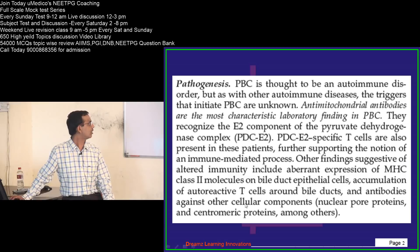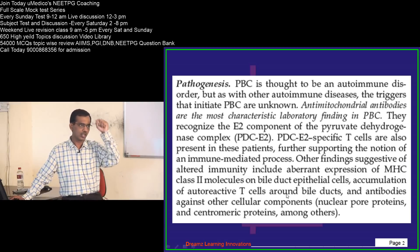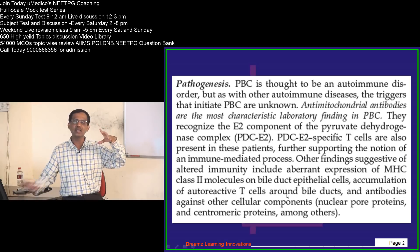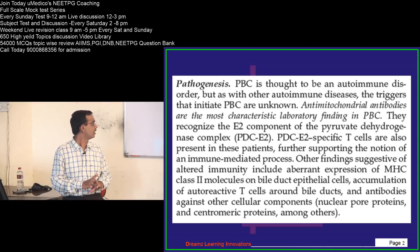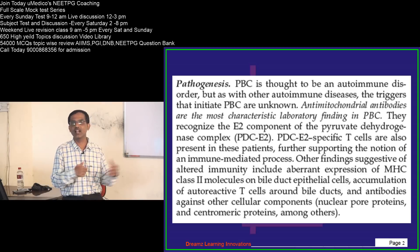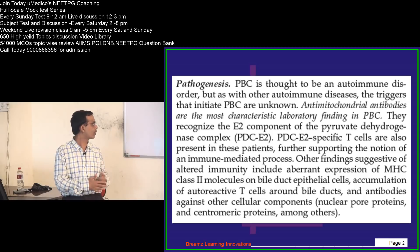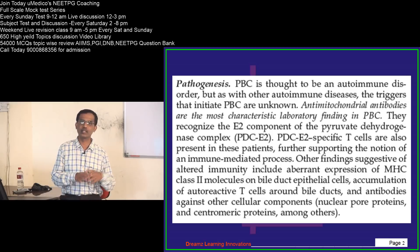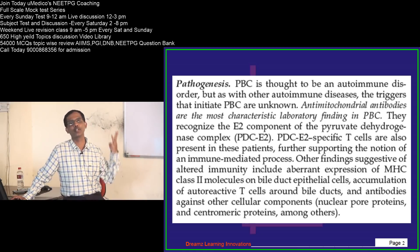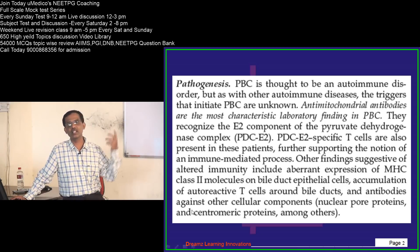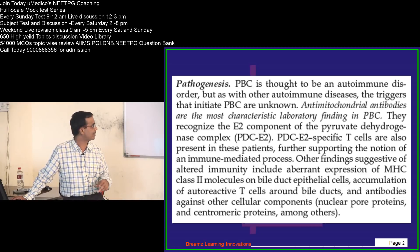There are also auto-reactive T cells accumulating around the bile ducts, which are surrounded by lymphoid infiltrate — all T lymphocytes which are auto-reactive. Antibodies are also present against other cellular components like nuclear pore proteins and centromeric proteins. These are indirect evidences, but the first three are direct evidences of the autoimmune nature of PBC. From this one piece of information, we can gather three very commonly asked MCQs on PBC.